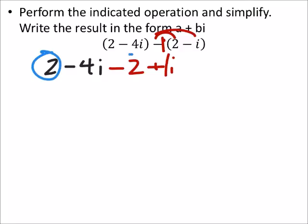Then I've got a 2 and a minus 2, so when I combine these, I get a 0.